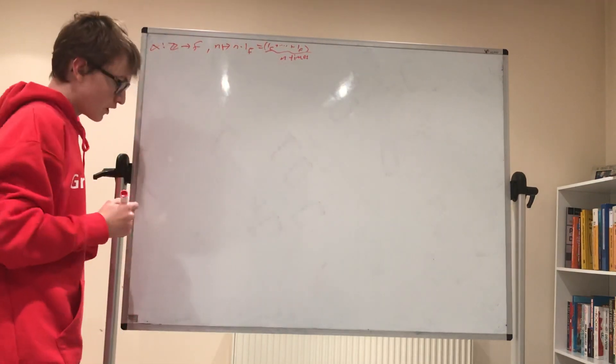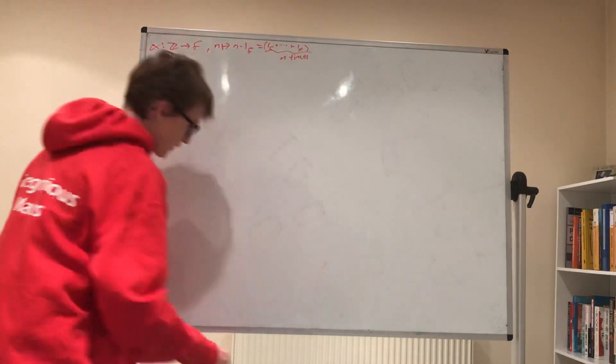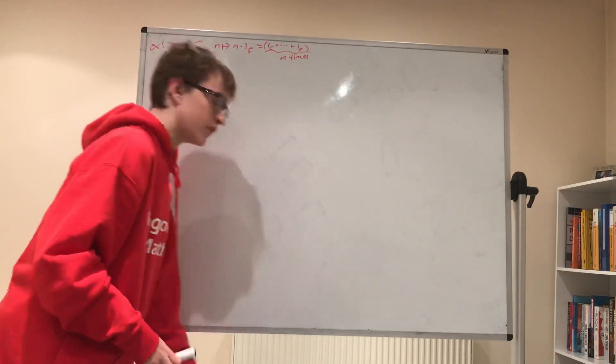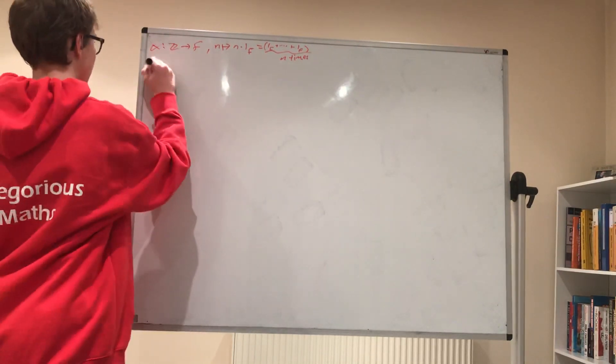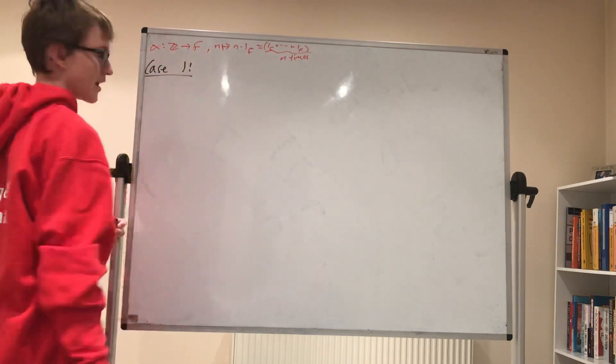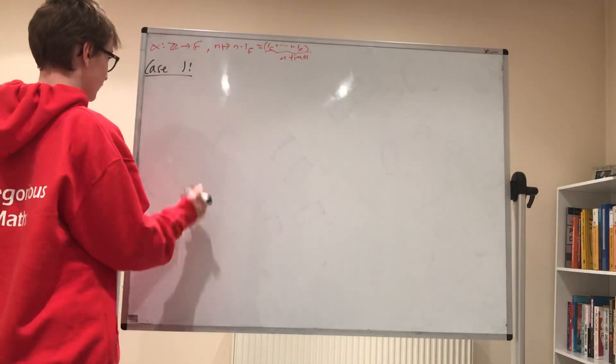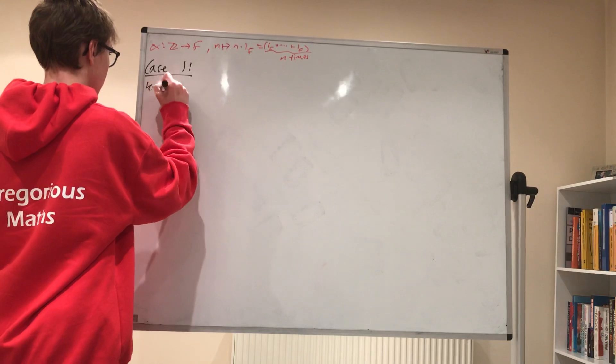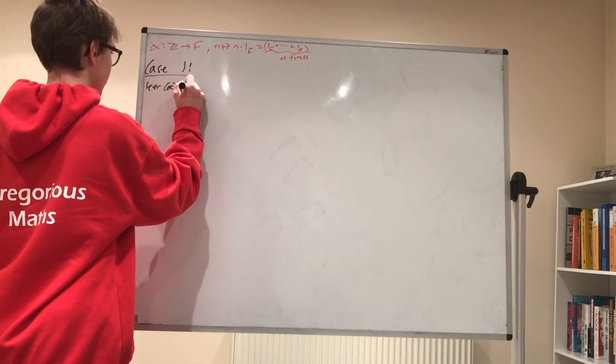So there are two cases here. We're going to study the kernel of this map. There's two cases to consider: when it is zero and when it's not zero. Let's look at the slightly more easy case, when the kernel is zero. So the kernel of alpha equals zero.